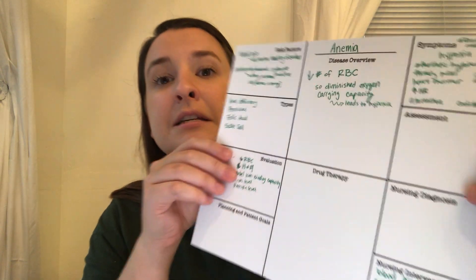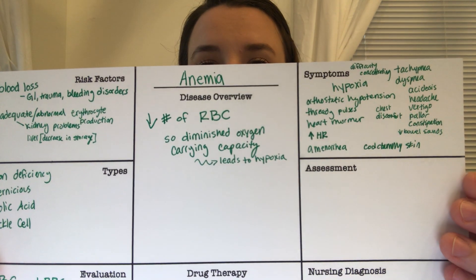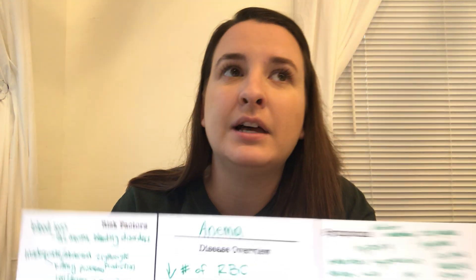Today we're going to talk about anemia — specifically what happens in anemia, and then the different types: sickle cell anemia, pernicious anemia, folic acid deficiency anemia, and iron deficiency anemia. Anemia begins with a decrease in the number of red blood cells.